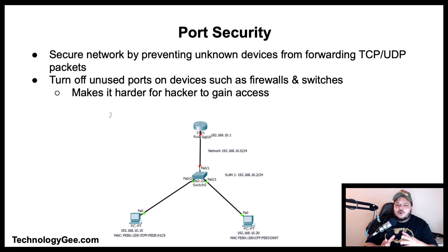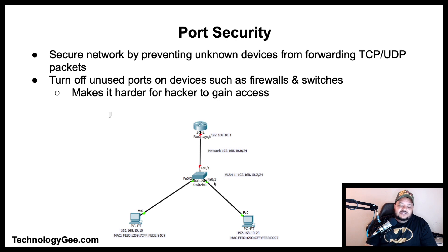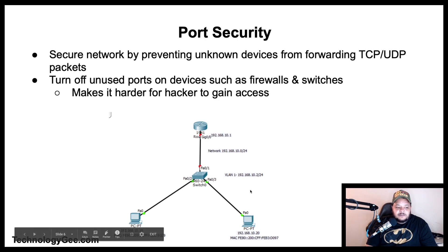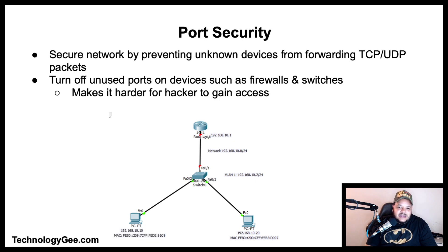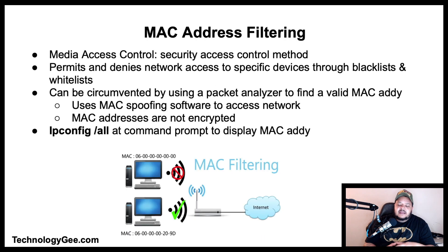Next we have port security. Port security helps secure the network by preventing unknown devices from forwarding TCP or UDP packets, and turning off unused ports on devices such as firewalls or switches makes it harder for hackers to gain access. For example, in a diagram with a switch connected to two computers, port security would disable the remaining unused ports so that nobody could plug another Cat5 cable into the switch or try to gain access through those ports.